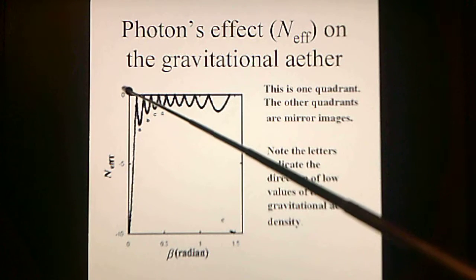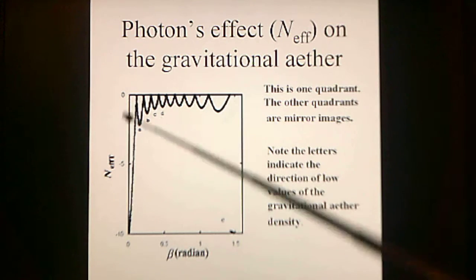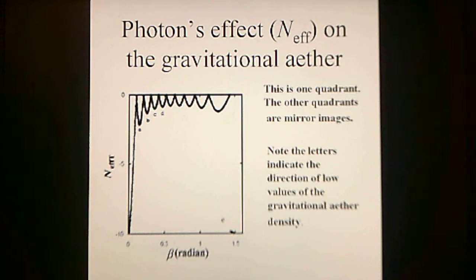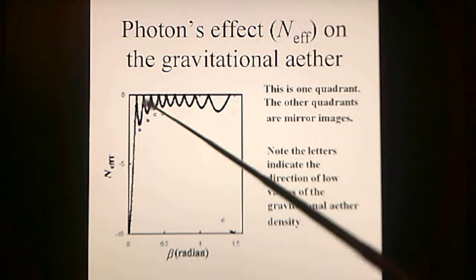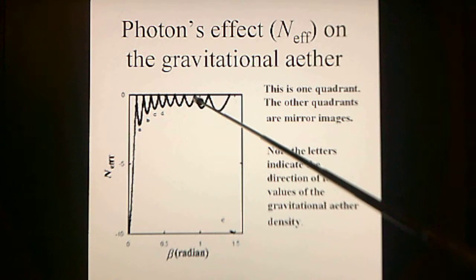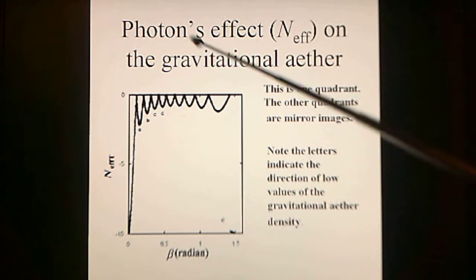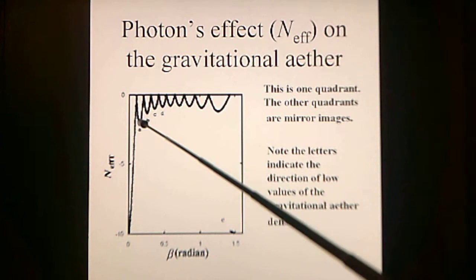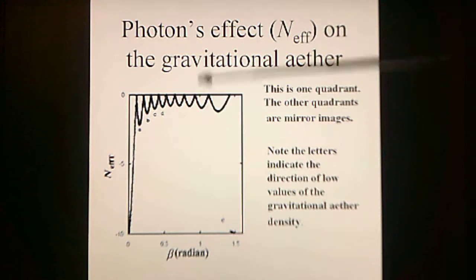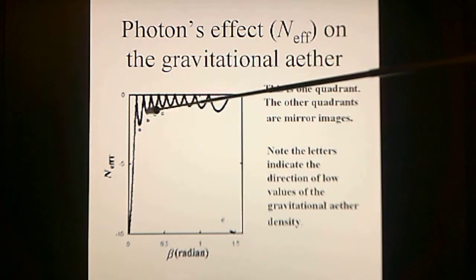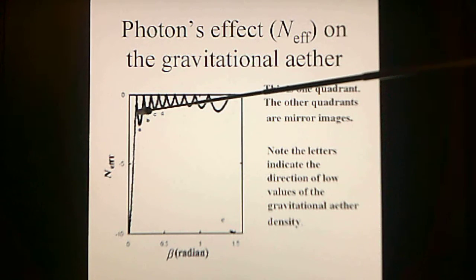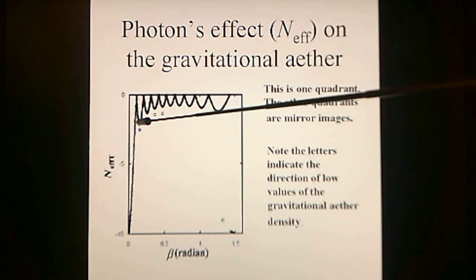This diagram shows the photon's effect on the gravitational ether. The photon is moving in one direction, with angles to the side. Here is the interference pattern, with minima labeled A, B, C, and D for future use. Newton suggests that if a photon is here, the gradient will direct it to the minima.